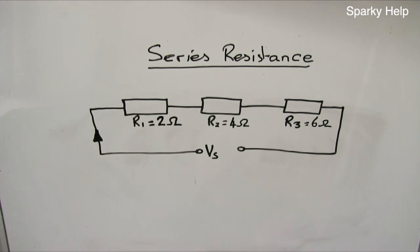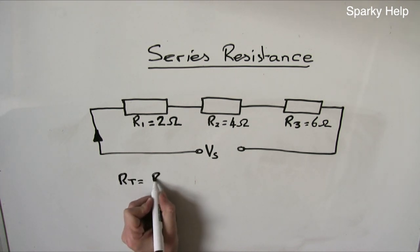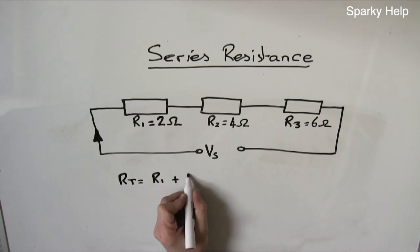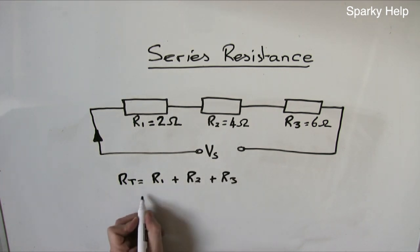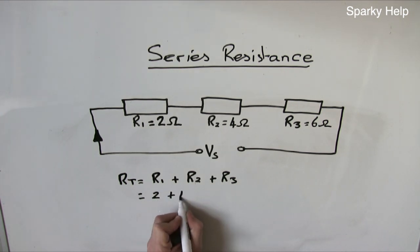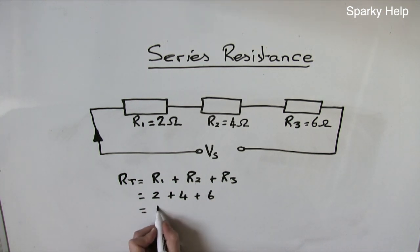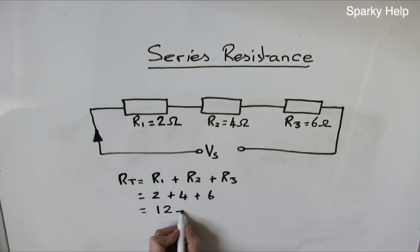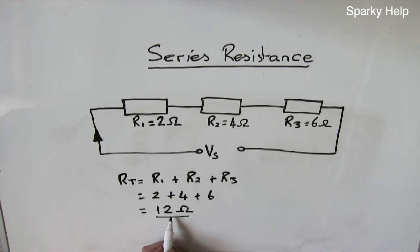Here we have a circuit with three resistors in series. Calculate RT. RT is equal to R1 plus R2 plus R3 — always put the figures in. So this whole circuit here could be replaced with one 12 ohm resistor.